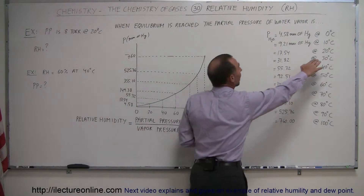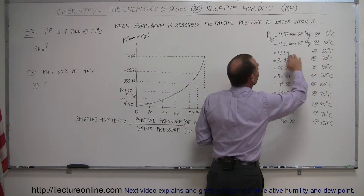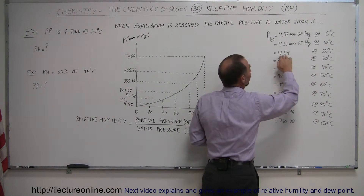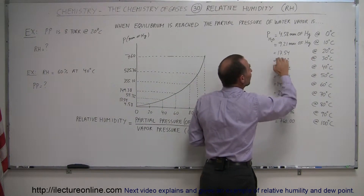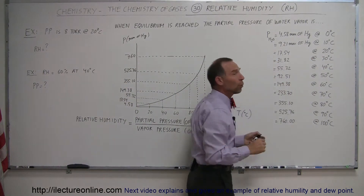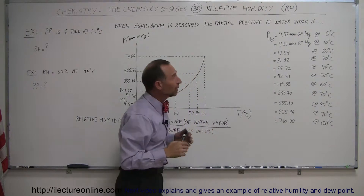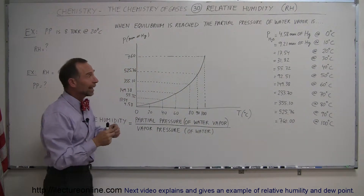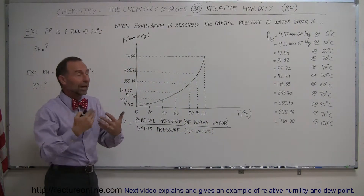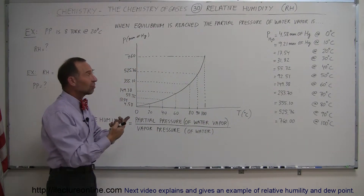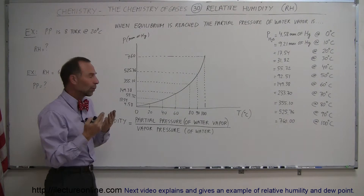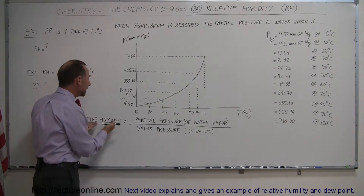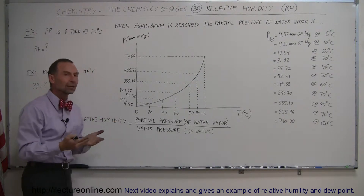For example, at 20 degrees centigrade, if the partial pressure is less than 17.54 millimeters of mercury for the water vapor, then the air is not fully saturated. Therefore, the relative humidity will be less than 100%.